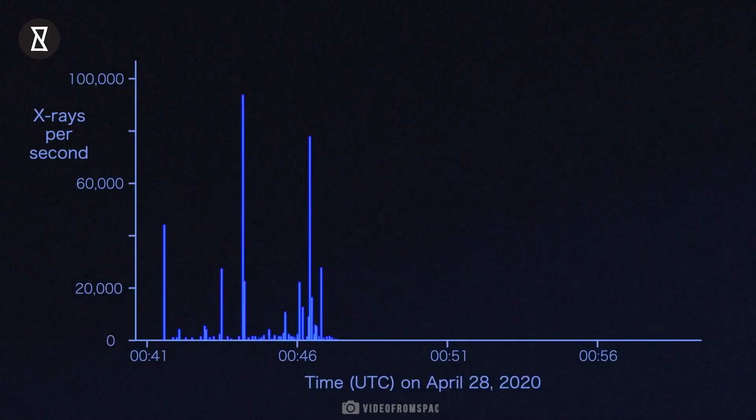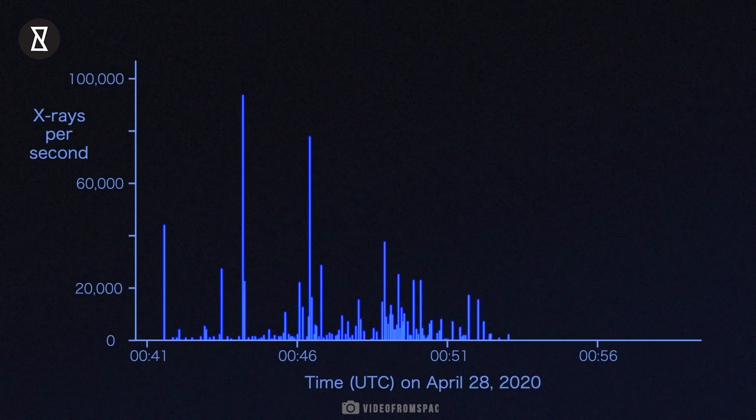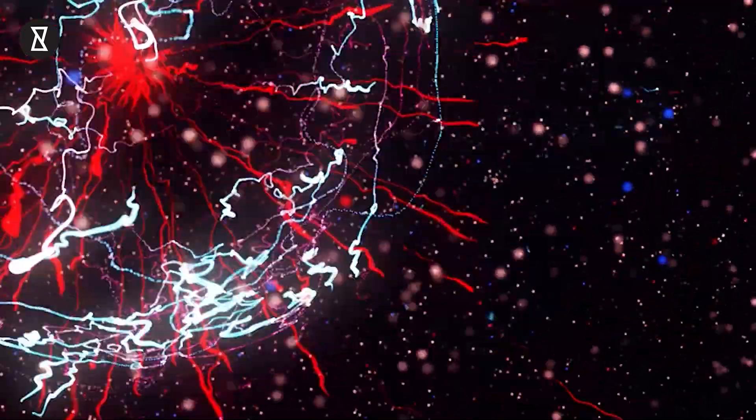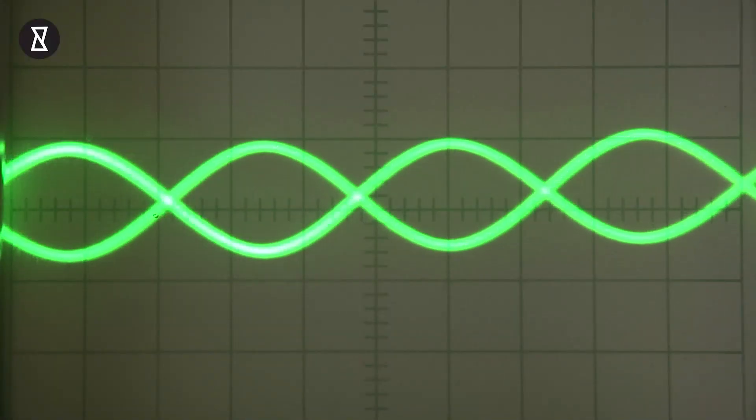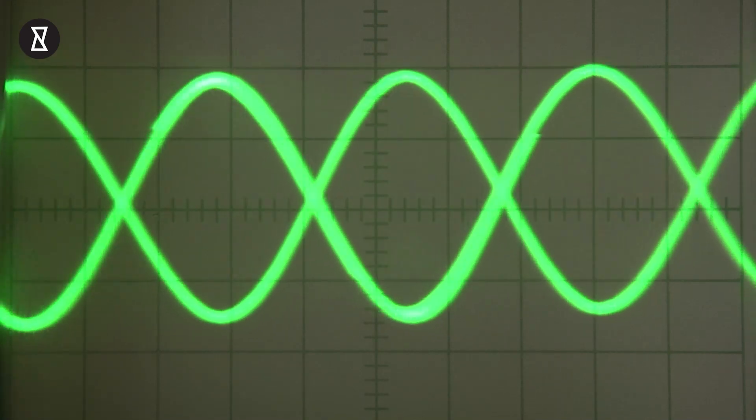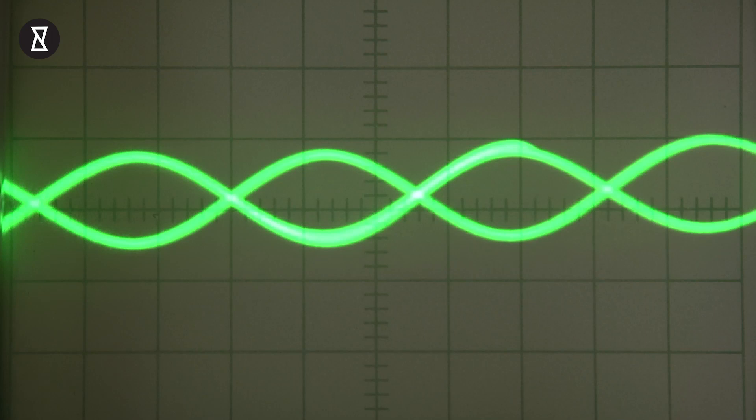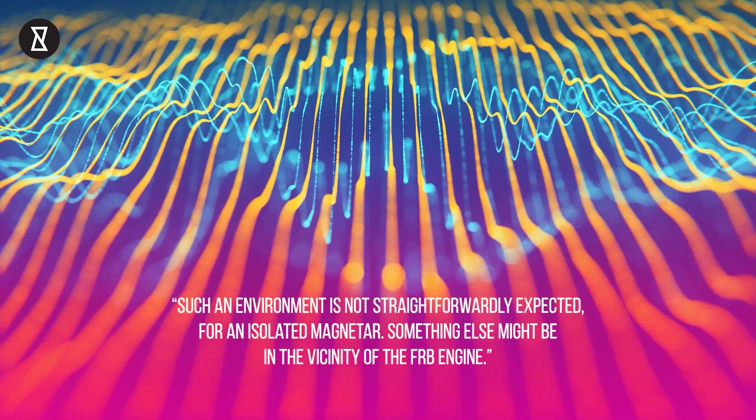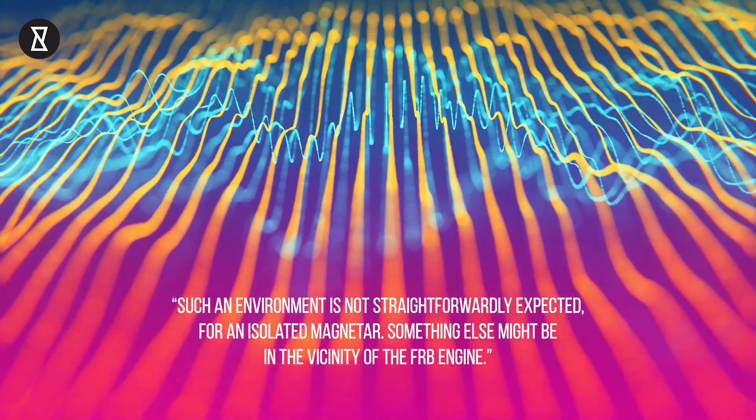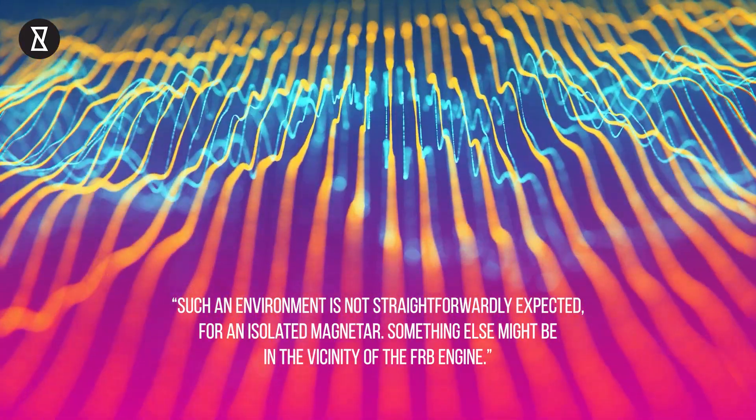What makes the latest observations surprising to scientists is the irregular short-time variations of the FRB source. A natural cosmic source would have regular variations happening at a regular frequency. In this case, however, the variations went up and down during the first 36 days of observation and then suddenly stopped during the last 18 days before the source quenched. Astronomers are puzzled, as this FRB source is in an environment that was never imagined before. Such an environment is not straightforwardly expected for an isolated magnetar. Something else might be in the vicinity of the FRB engine, said Zhang.